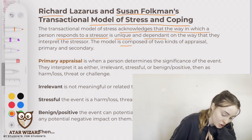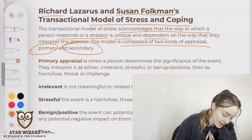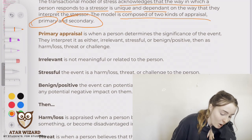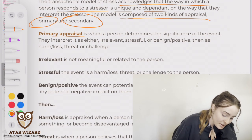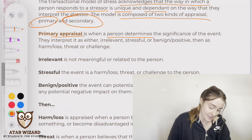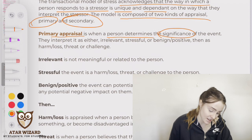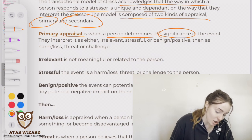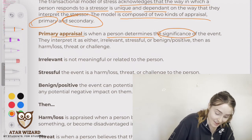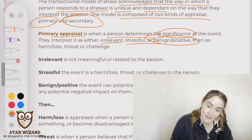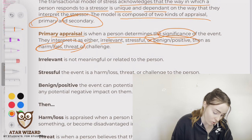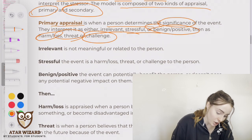The model is composed of two kinds of appraisal: primary and secondary. Primary appraisal is when a person determines the significance of the event — how significant the event is. They interpret it in the categories of either irrelevant, stressful, or benign/positive. Then, they further appraise it as harm, loss, threat, or challenge.